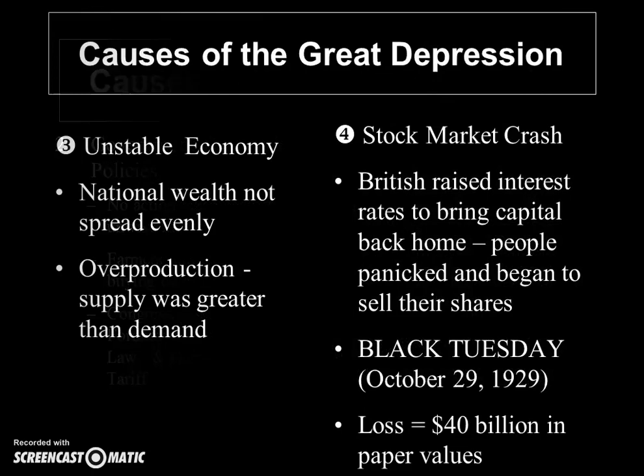You had an unstable economy where wealth was not evenly distributed. You also had overproduction, particularly in certain industries like the automobile industry, as well as overproduction in the textile industry and in farm industries — wheat was sitting in train depots rotting. In 1929, the stock market crashed on Black Tuesday, losing $40 billion in paper values that day, with 19 million trades completed.